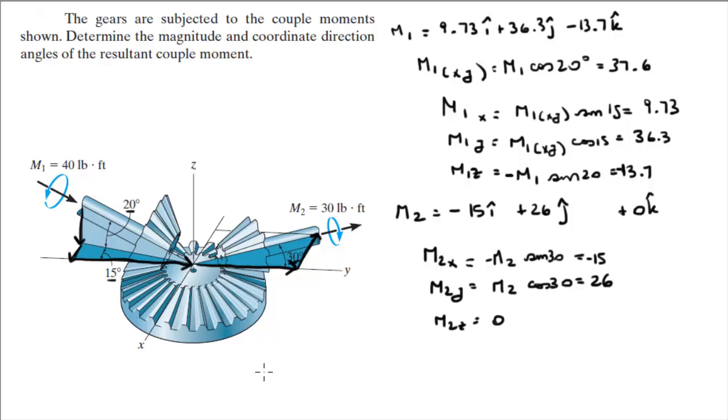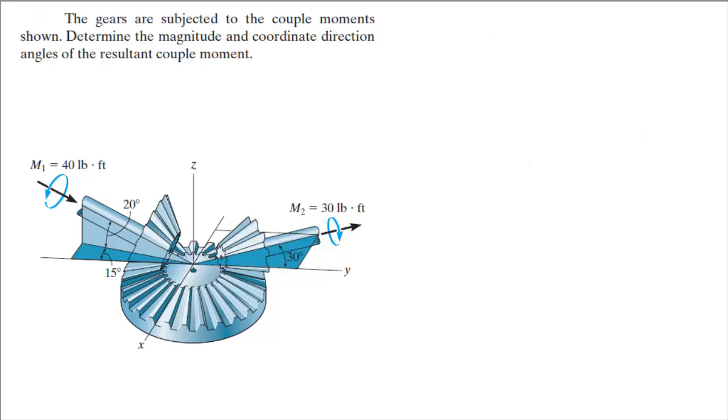Now that you have M1 and M2, this becomes very easy. The resultant moment is given by M1 plus M2. So you add the i's with the i's, the j's with the j's, and the k's with the k's. And you should get that this is equal to -5.27 in the i, plus 62.3 in the j, minus 13.7 in the k.